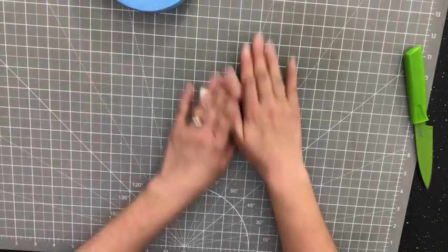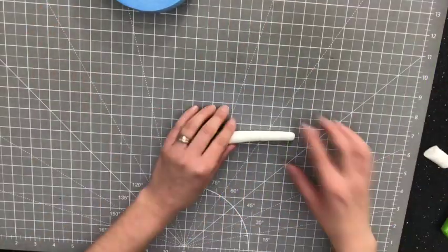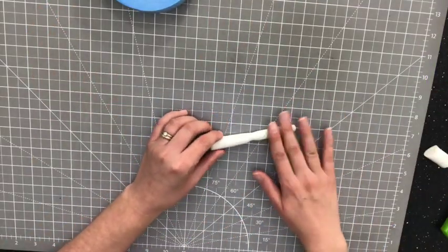I'm starting with her legs, rolling out a cord and then pulling in where the knee would be. Then I can cut it to size.